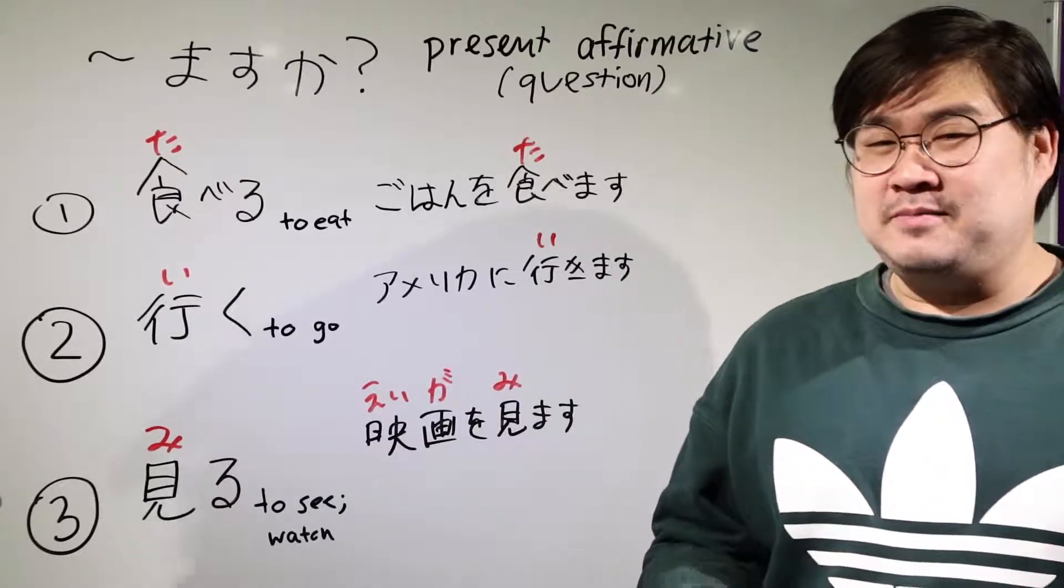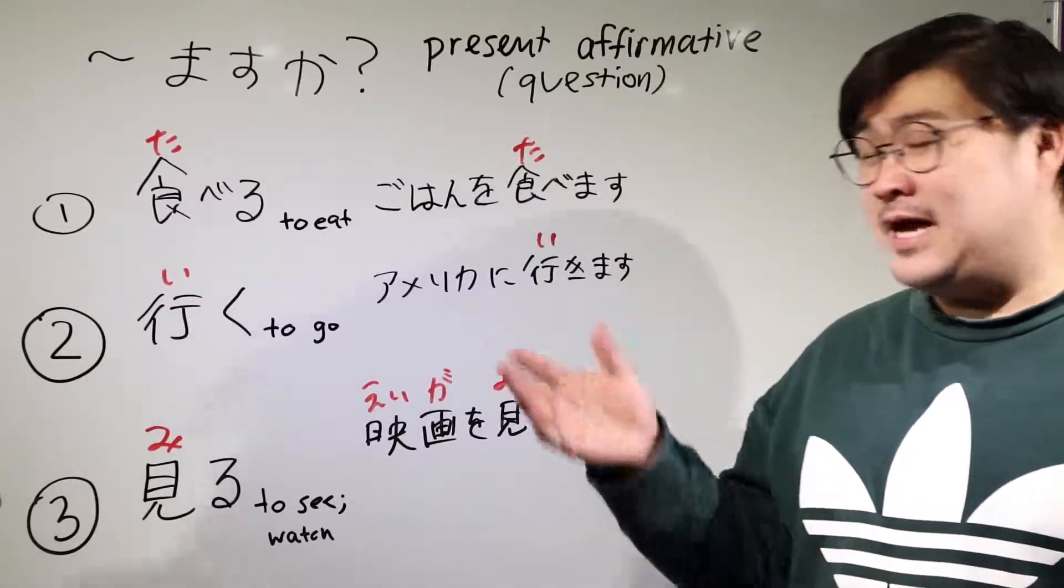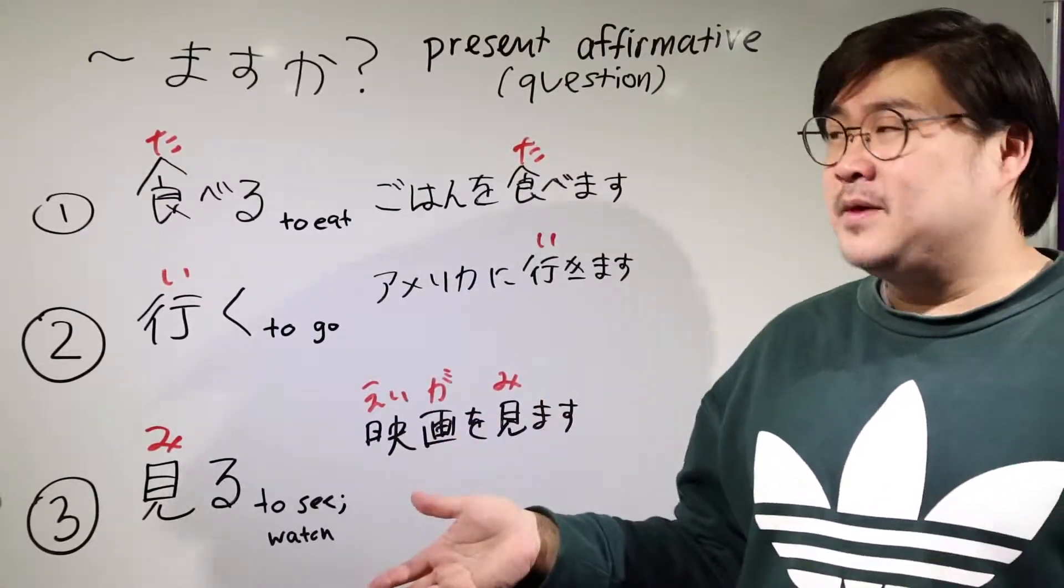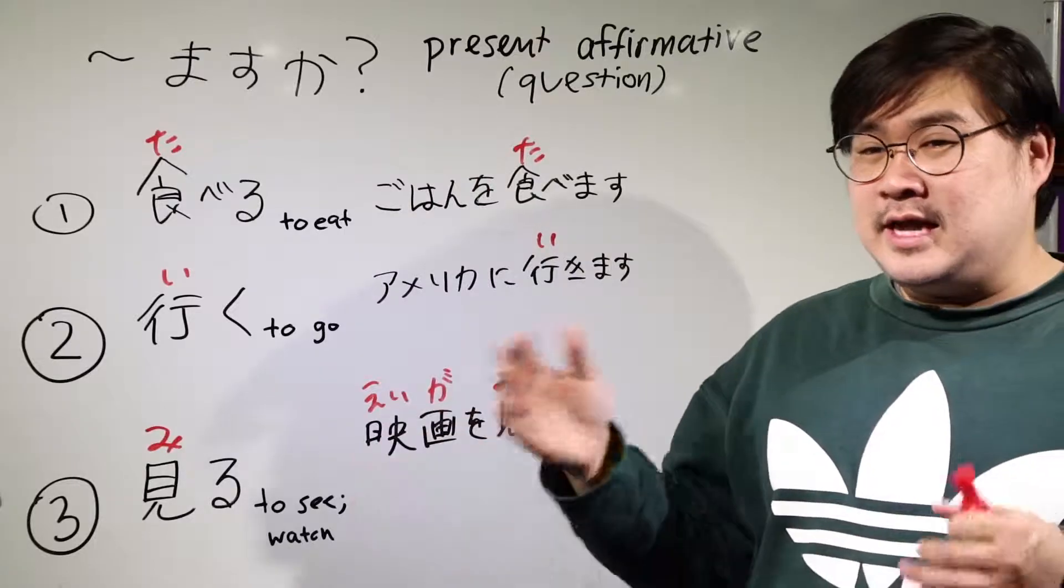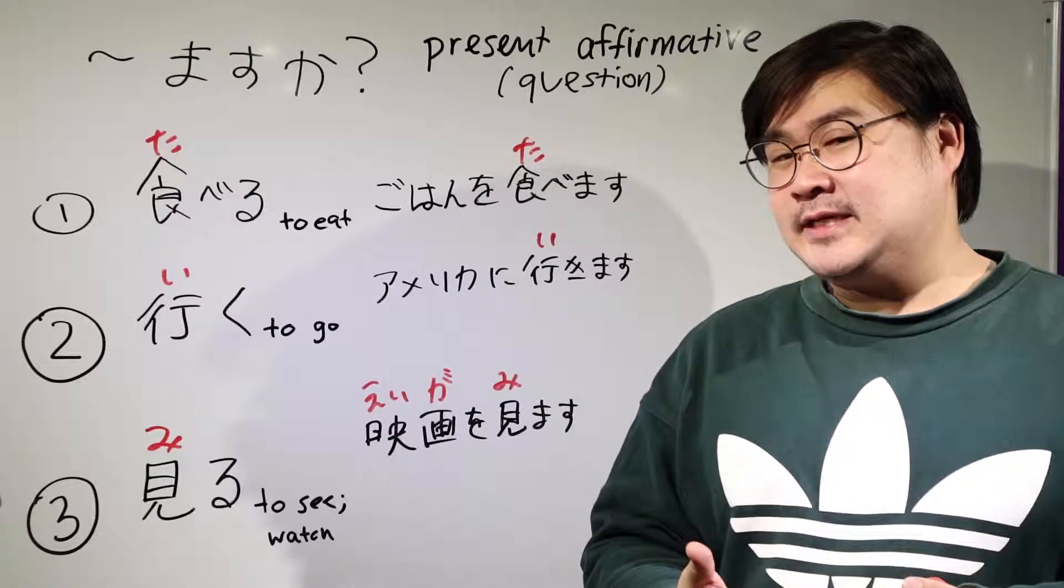So last time I talked about a speech pattern called masenka, which is an invitation to invite people to do something. It attaches to the verb - it's basically the negative form plus ka. This time we're going to talk about a different form, which is the present affirmative, and it basically makes a question. Let's get started.